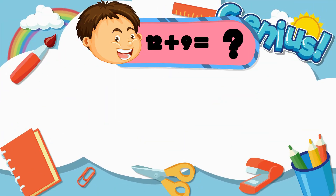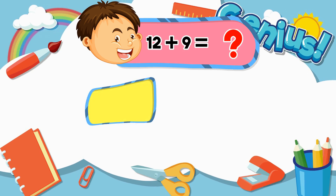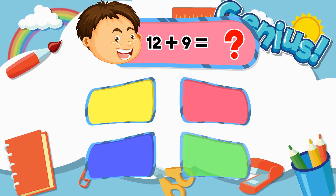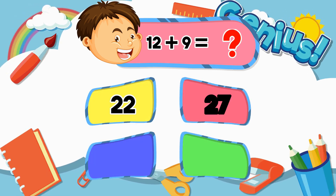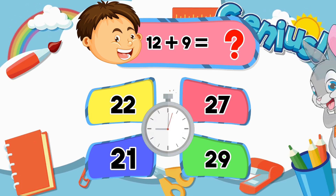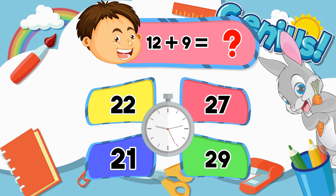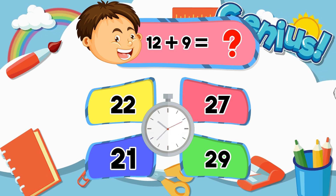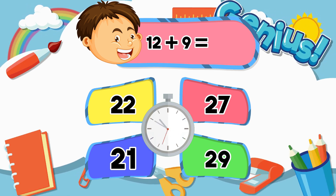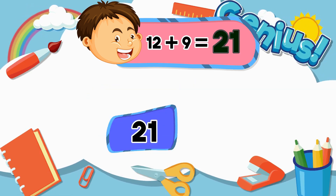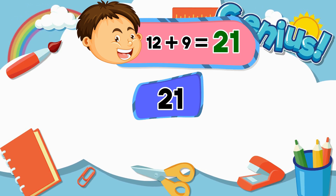What is 12 plus 9? Options: 22, 27, 21, 29. Answer: 21.